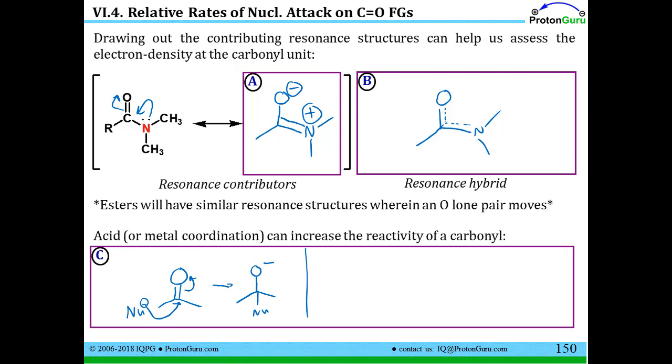We can predispose that oxygen to really want to have electrons by either protonating it. If you react a carbonyl with an acid, H+, you would then protonate it like that. Or you could coordinate the O to a metal. We talked about a lot of organometallic reactions, and I showed you some cases where a lone pair can be pulled towards a metal.